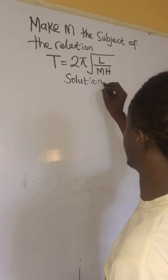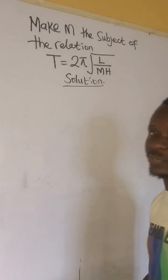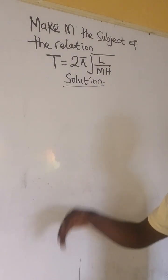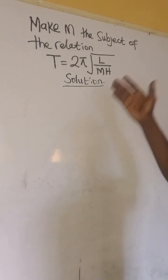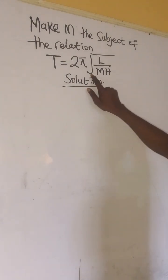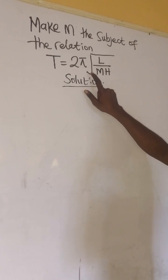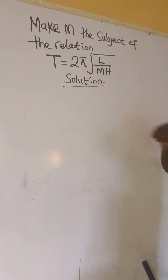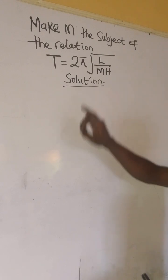This is similar to questions we've covered in my class on subject of formula. The first thing we have to do is remove this root, and to remove this root we square both sides.